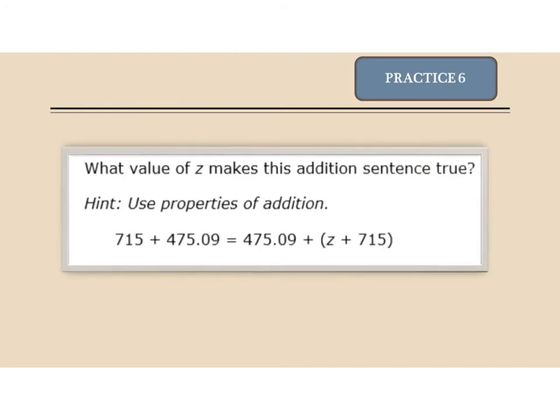Practice problem 6: what value of z makes this addition sentence true? Notice there are only two numbers on the left and three on the right. What would I have to add to these to get the same answer? Hint — think of the identity property.